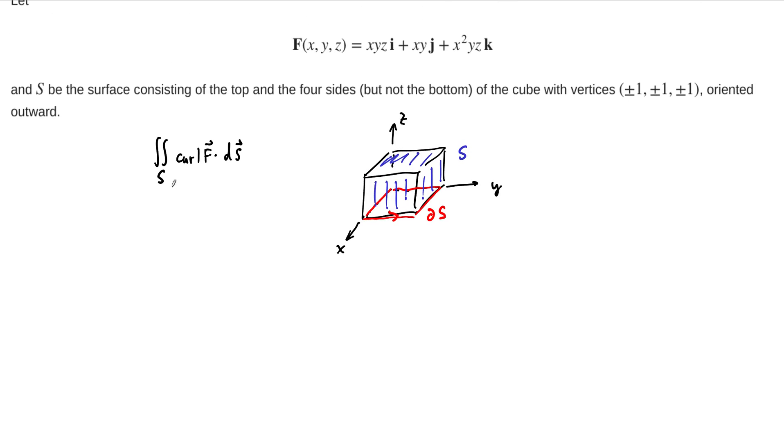Remember that by Stokes' Theorem, this is just equal to the path integral around the positively oriented boundary ds of f dotted with dr. What we need to do is represent this boundary curve by some parametrization. The boundary curve is coming to us in four pieces.